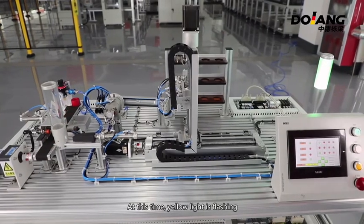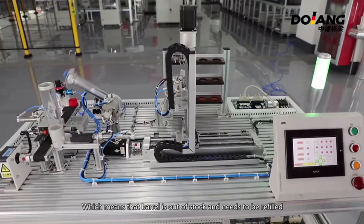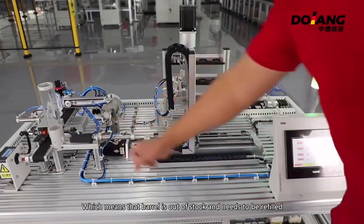At this time, the yellow light is flashing, which means that the barrel is out of material and needs to be refilled.